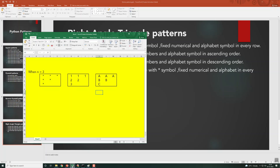When I say inverted triangle, I expect this output. When n equals 3, I want star symbols, numbers, as well as alphabets.